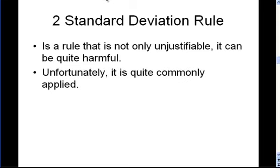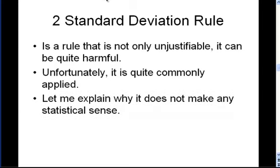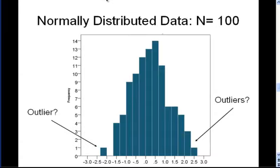Unfortunately, it's actually very commonly applied. I would say that this is probably the rule that you would hear most frequently if you asked people how do you identify an outlier in your data. And in this presentation, I'm not only going to say that it's an unjustifiable rule, I'm also going to explain very clearly why it doesn't make any statistical sense.